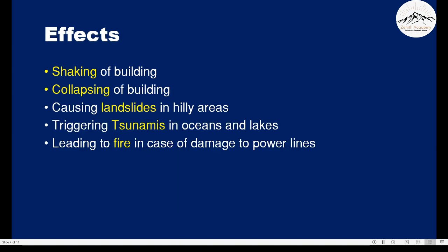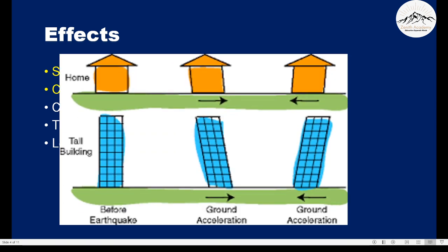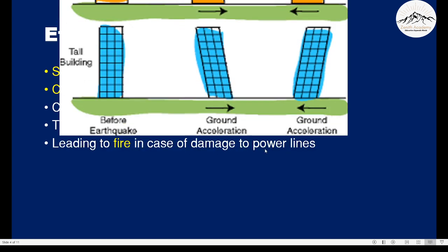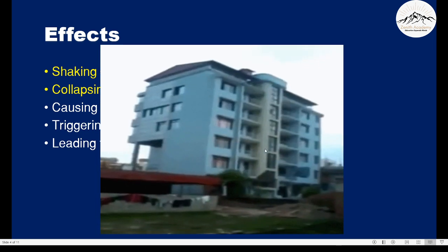The effects of an earthquake: shaking of buildings. This shaking will occur if the building is resisting the movement of the ground. As you can see, the ground is moving, but because the building is resisting this movement, it is moving in a backward direction. Earthquakes can also cause collapsing of a building.